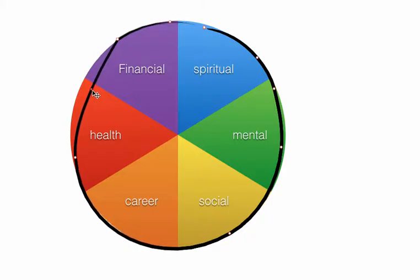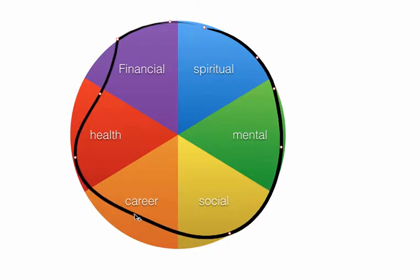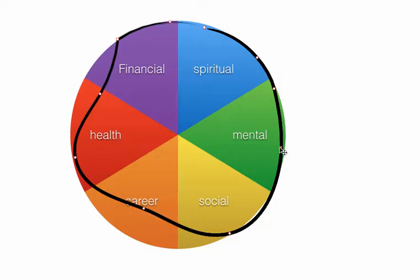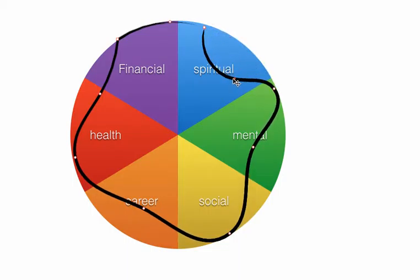Now realistically, what most people have is a variety of scores. Like they might have, I don't know, a seven in relationship, a six in career, maybe they've got mental down around about five.